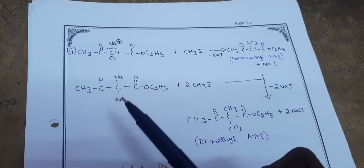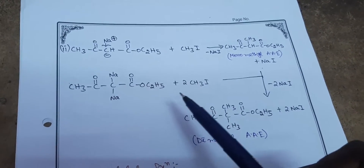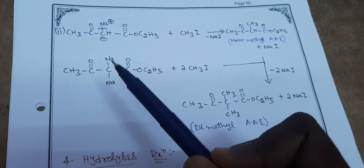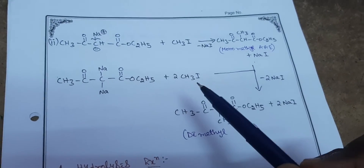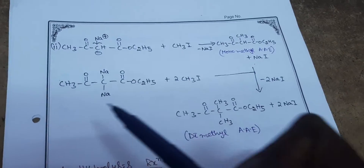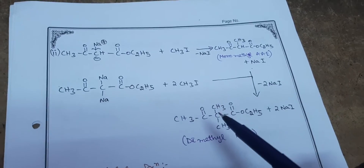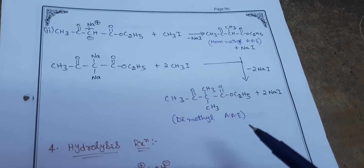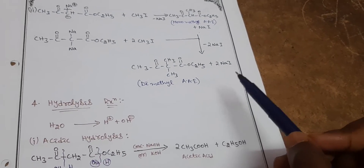When disodium acetoacetic ester reacts with two moles of methyl iodide — two moles because two sodiums are present — two moles of NaI are released and two methyl groups attach in place of the two sodium ions. The product formed is the dimethyl form of acetoacetic ester, along with two moles of sodium iodide.